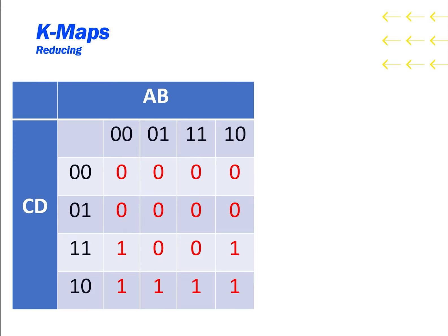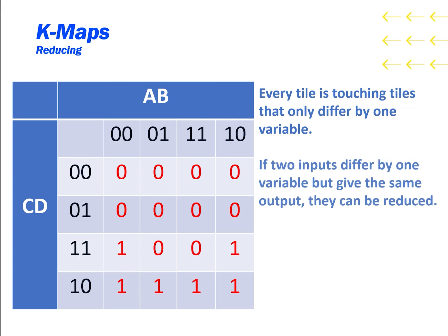Now that we have our K-map, how do we use it to reduce our function? Well, remember that on a K-map, every tile is touching other tiles that differ by only one variable. And if two inputs differ by one variable but give the same output, they can be reduced. Therefore, if a one tile is touching another one tile on a K-map, it can be reduced.